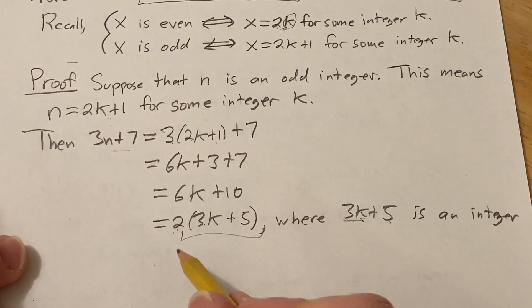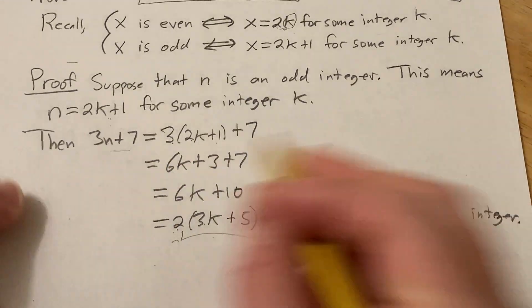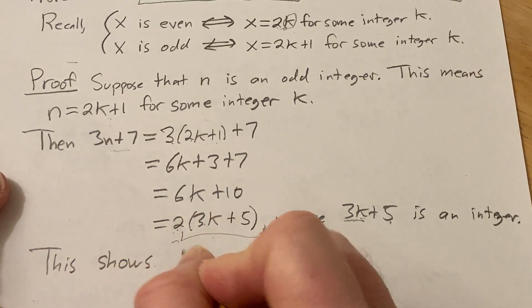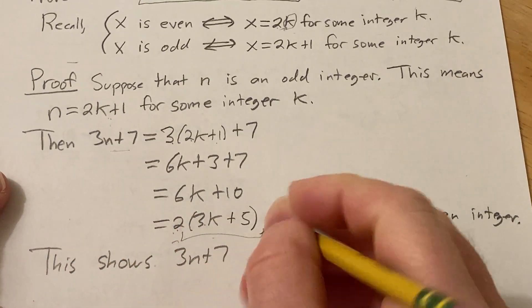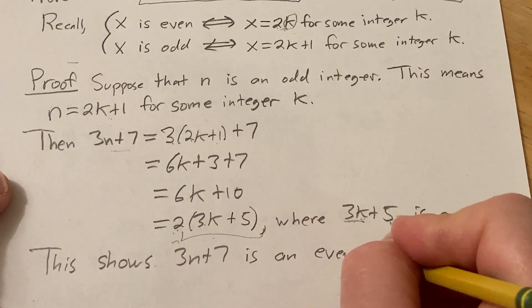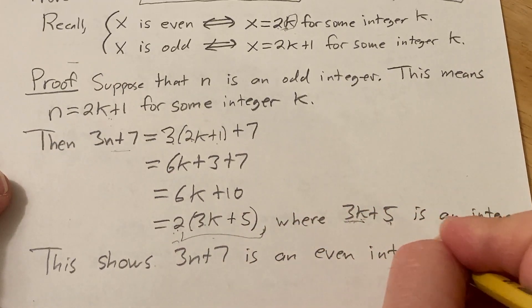So we have that 3n plus 7 is 2 times an integer, or it's a multiple of 2. So this means, or this shows, 3n plus 7 is an even integer. And that completes the proof.